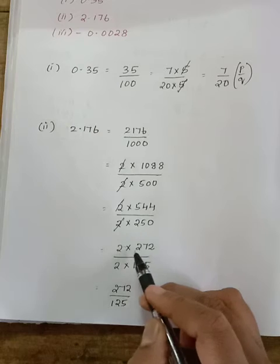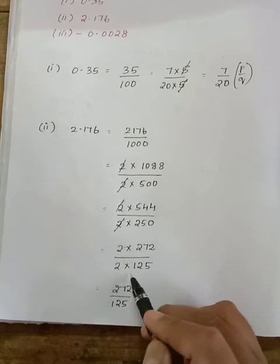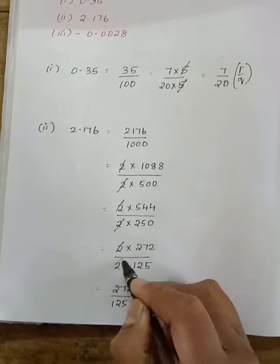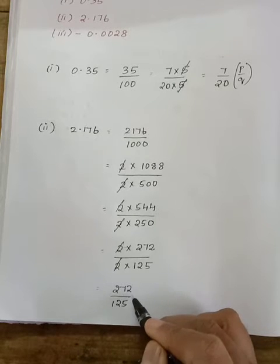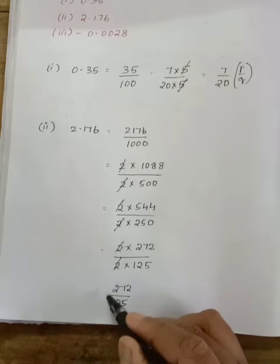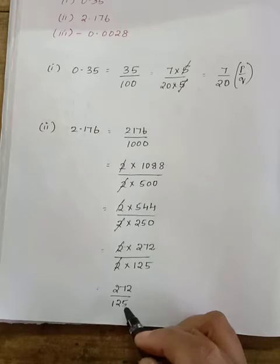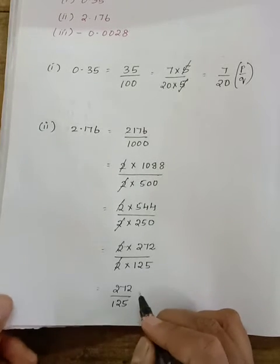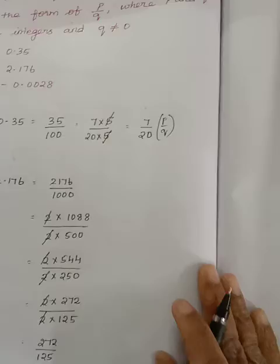544 can be written as 2 into 272 divided by 2 into 125. 2 and 2 get cancelled. Remaining we have 272 divided by 125. We cannot divide any more. So we have written in the standard form and it is also in the form P by Q where Q value is not equal to 0.